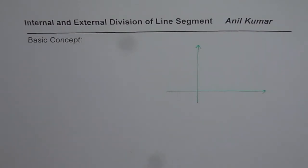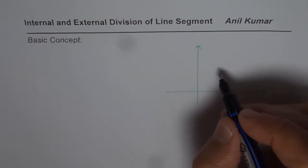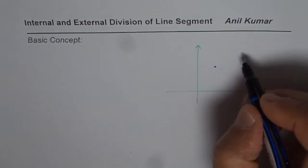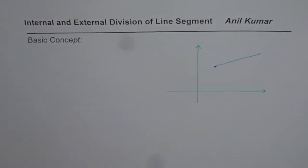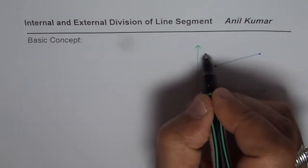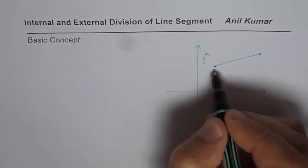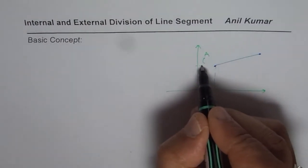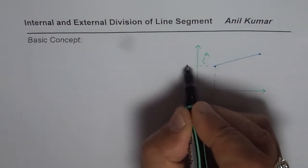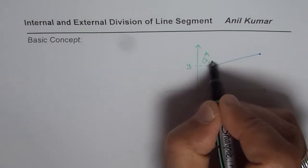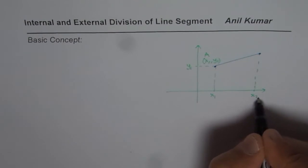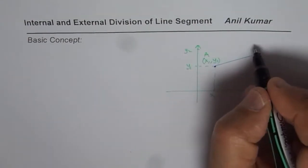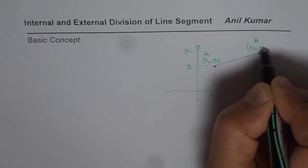Let us review a few basic concepts. Let us say we have two points — point A and point B. Normally whenever you have a point, we say the point has a coordinate value, and we write X and Y coordinates. So let us say this is X1 and Y1 for point A. Similarly for B we could have coordinate values X2 and Y2.